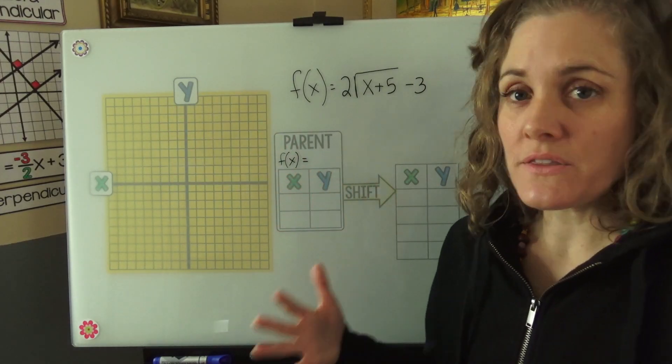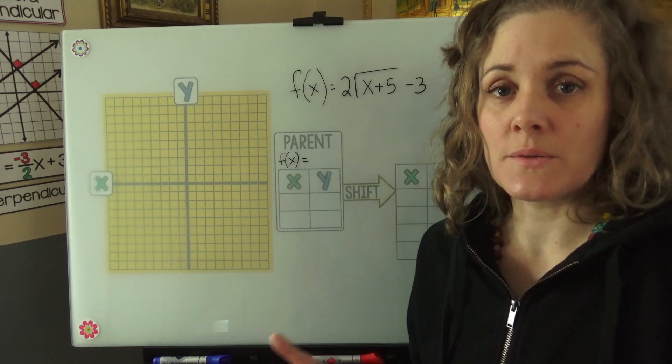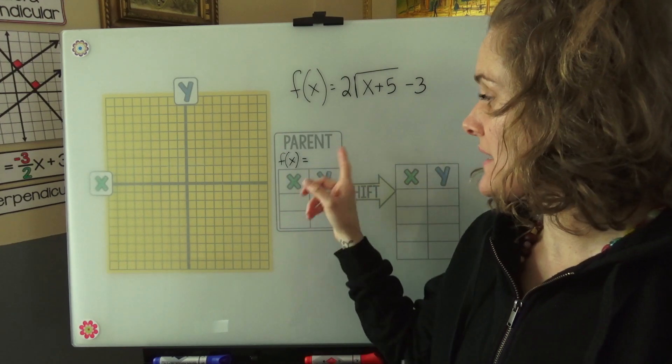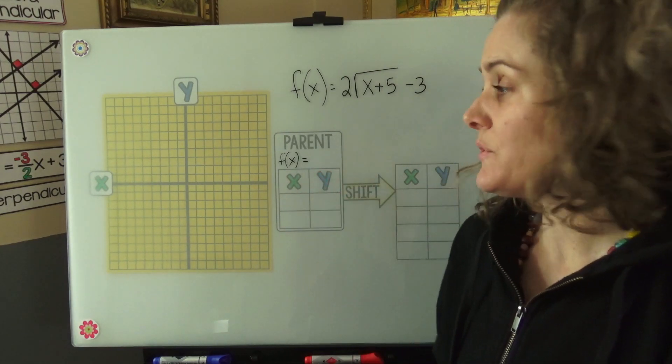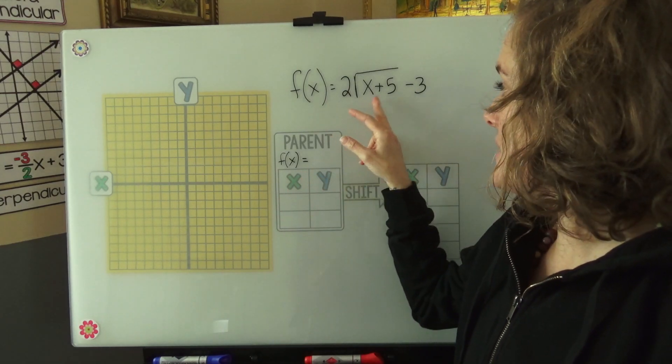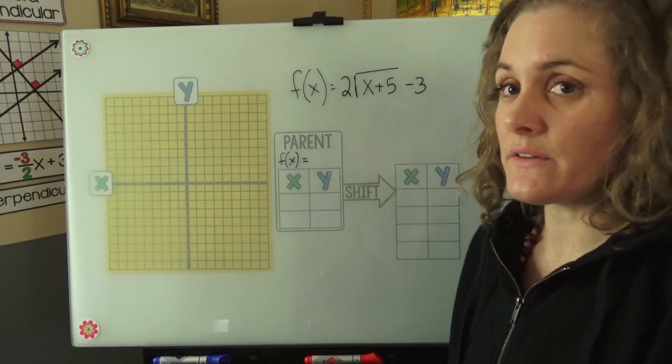My favorite method to graph these radicals is by shifting the parent function. So first we're going to identify that parent function, and then we'll shift the function based on what we see inside and outside of the radical.